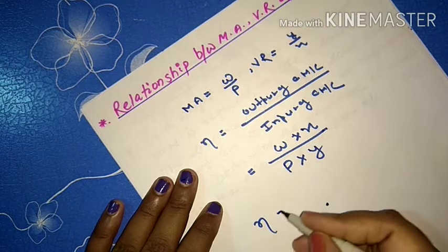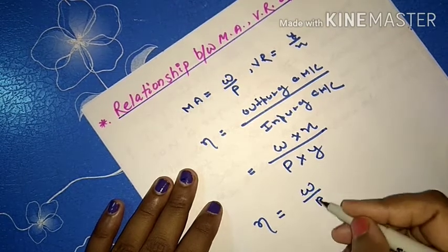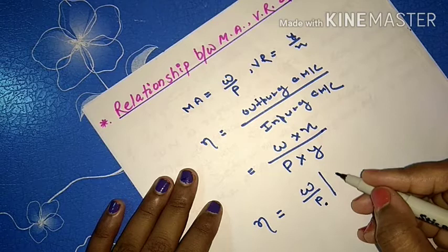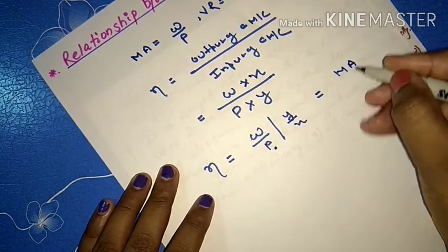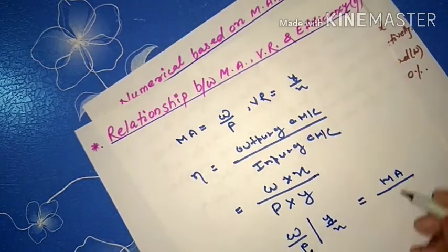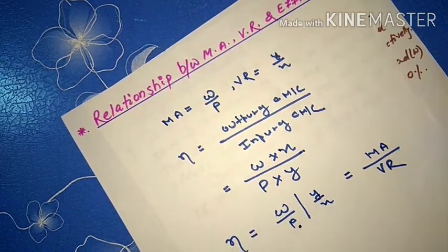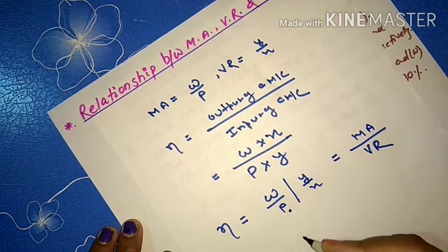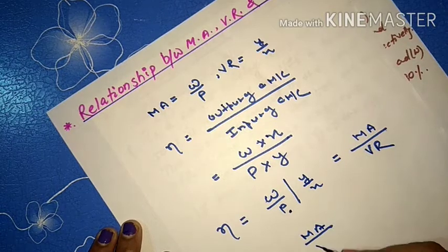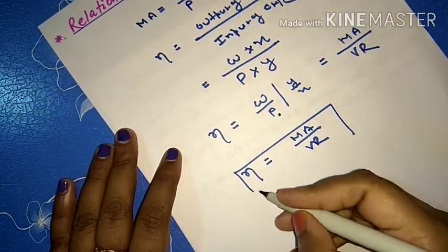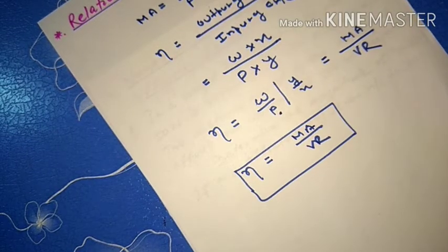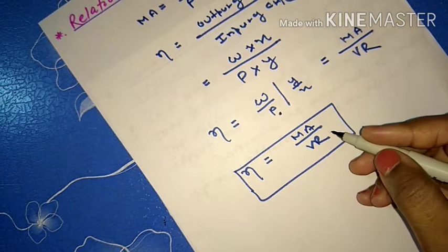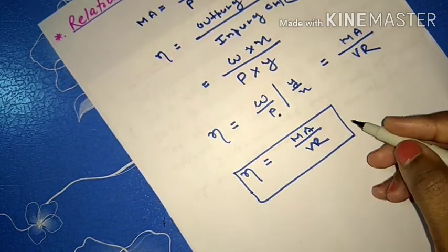From this, efficiency equals (W/P) divided by (y/x). Here W/P is the mechanical advantage, and y/x is the velocity ratio. So we get: efficiency equals mechanical advantage divided by velocity ratio. This is the required expression — the relationship between mechanical advantage, velocity ratio, and efficiency.